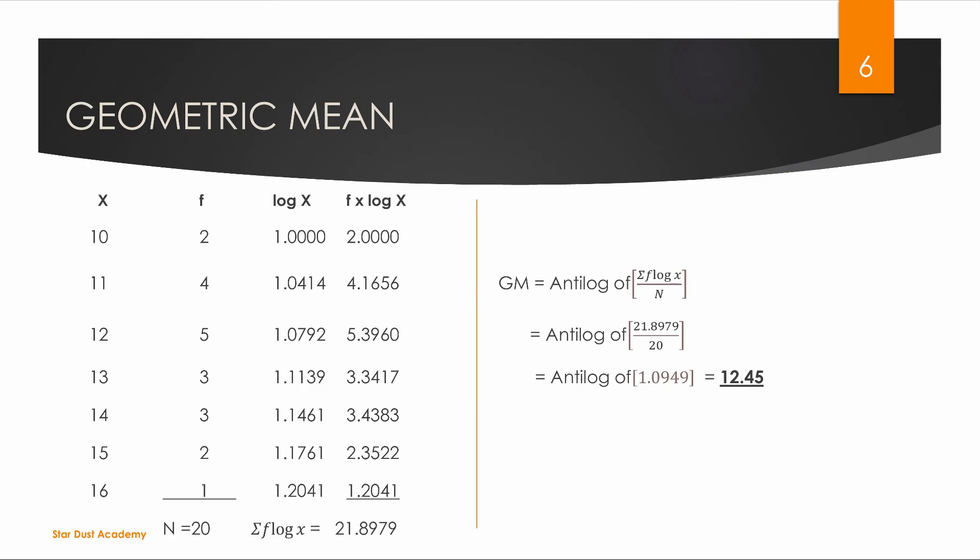Then we write the value. We write the value 1.0949. We write the value 1.0949, which gives us 1.0950. Then we multiply the frequency with x to get our discrete series geometric mean.